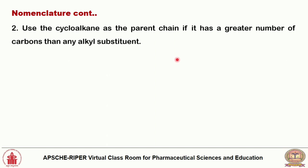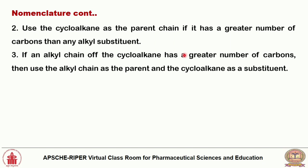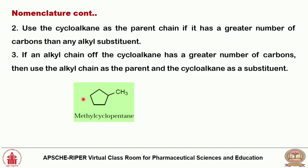The second rule: use the cycloalkane as the parent chain if it has a greater number of carbons than any alkyl substituent. For example, a cycloalkane with five carbons and a one-carbon methyl substituent — since cyclopentane has more carbons, it is the parent chain. The name is methylcyclopentane.